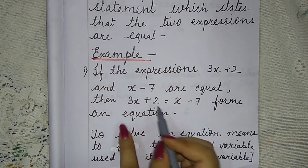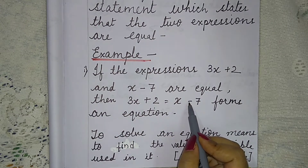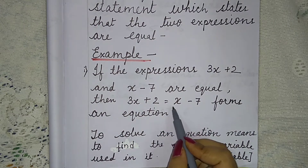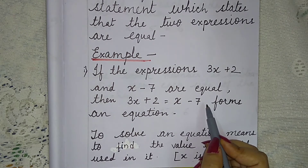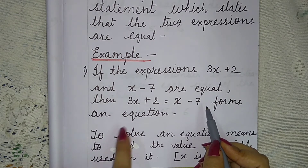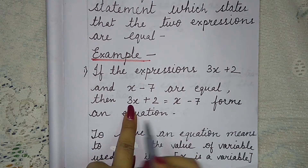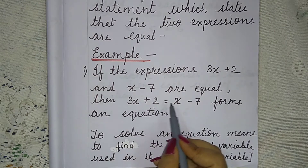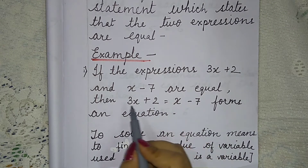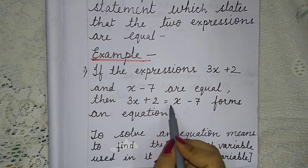What is the right hand side? That is x minus 7 — that is RHS, which means right hand side. And the left hand side is 3x plus 2, which is LHS, the left hand side.